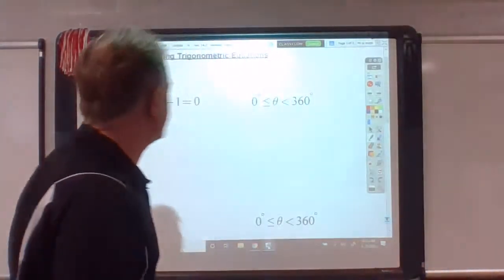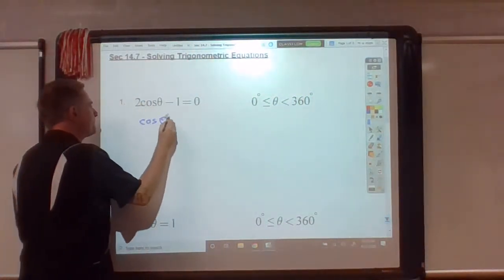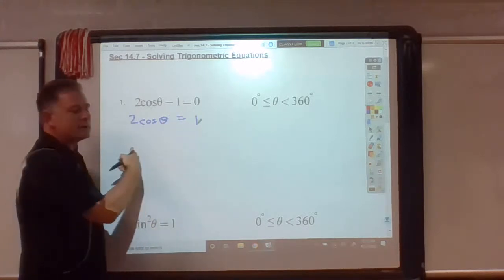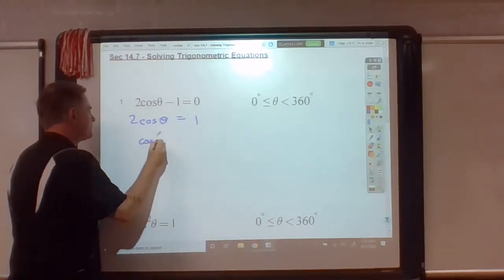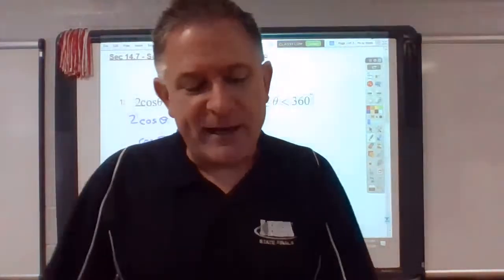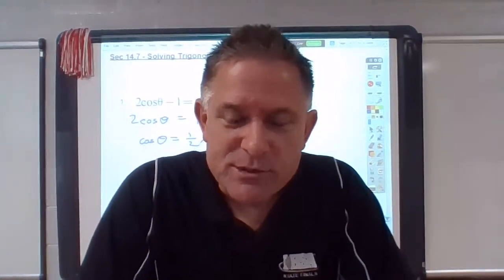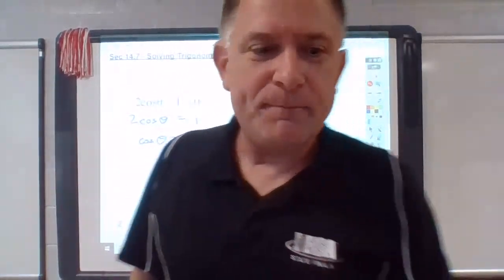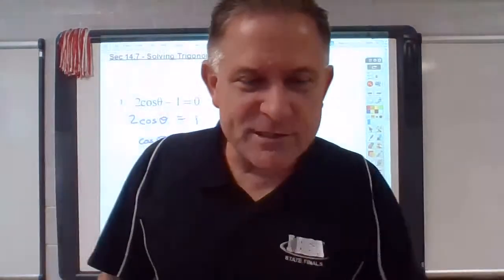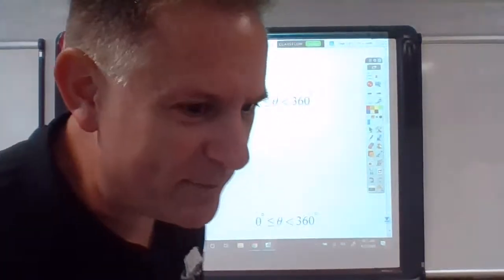This first one says 2 cosine theta minus 1 equals 0. I want you to think of it as 2x minus 1 equals 0. And if I gave you 2x minus 1 equals 0, you'd have no problem solving this equation. So we're going to treat it like a regular algebra equation at first. Add 1 to both sides and we get cosine of theta equals 1 half. What would happen if you solved this problem using your calculators right now? You would type in inverse cosine of 1 half, and it would present you with an answer.